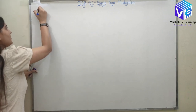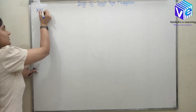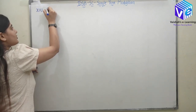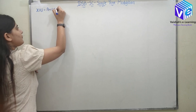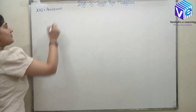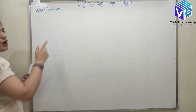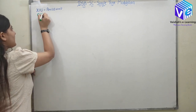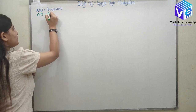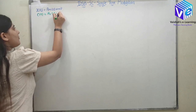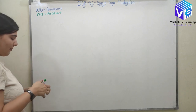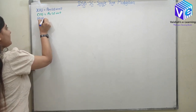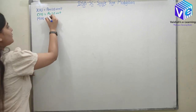For single tone modulation, x(t) represents my input signal. The input signal is a function of only one frequency, so it has only one frequency component. I am representing x(t) as Am·cos(ωm·t). The carrier is represented as Ac·cos(ωc·t). Now m(t) is the modulated signal, so m(t) = x(t)·c(t).